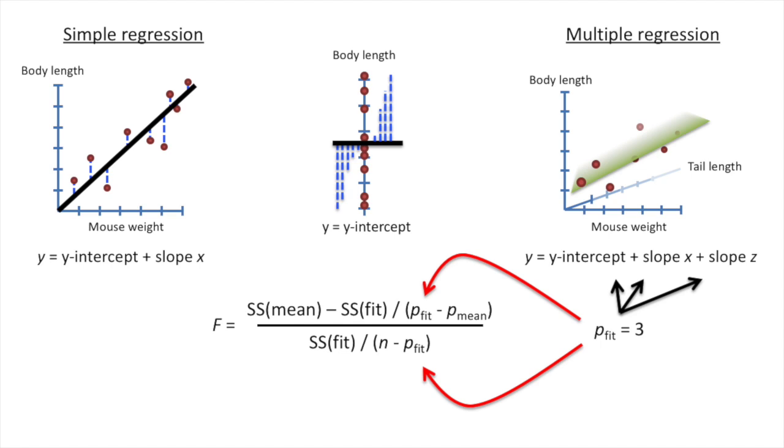If we added additional data to the model, for example, the amount of time a mouse spends running on a wheel, then we have to change p-fit to equal the number of parameters in our new equation. And for both simple regression and multiple regression, p-mean equals 1, because we only have to estimate the mean value of the body length.